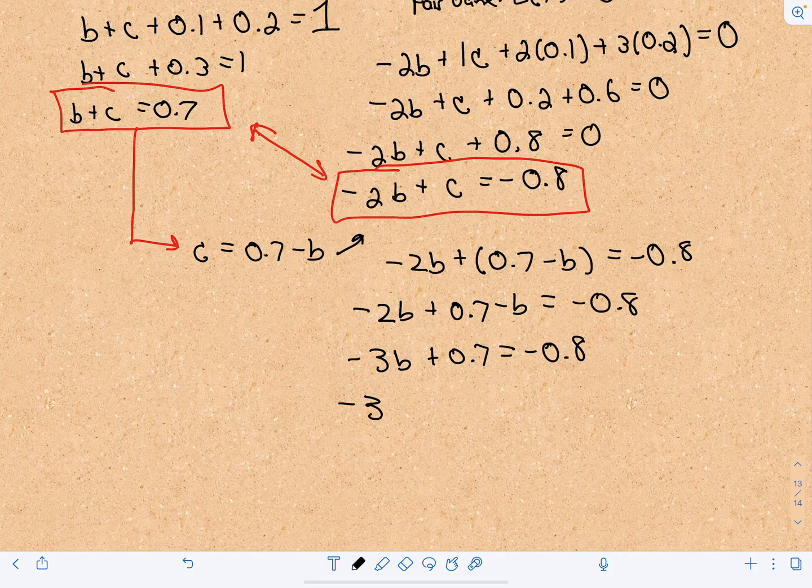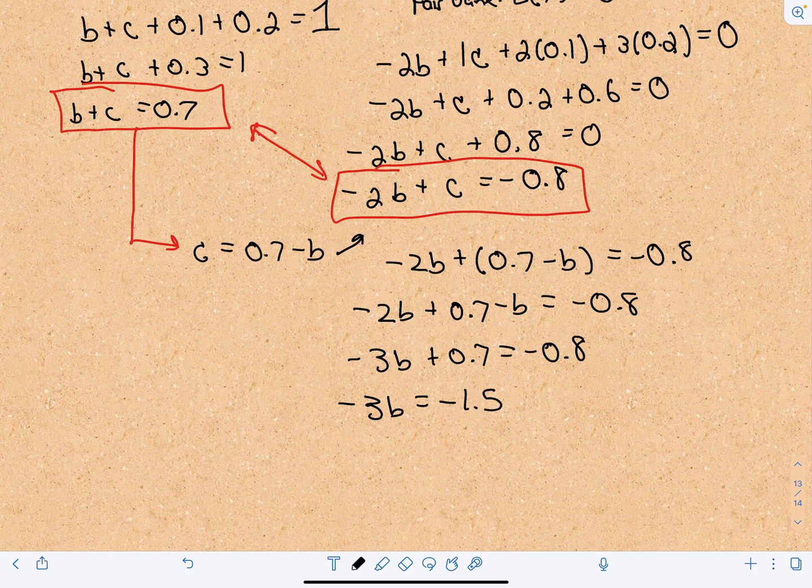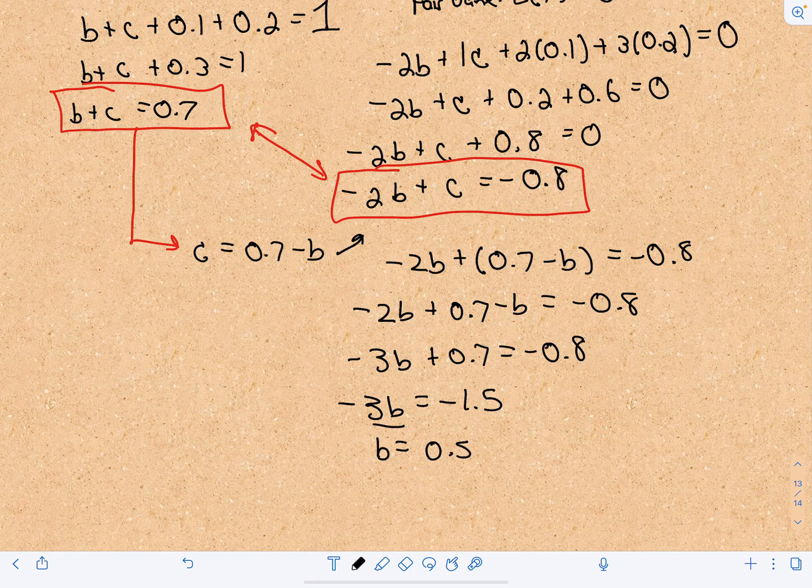That's going to give me negative 3B equals negative 1.5. And if I divide both sides by negative 3, that's going to give me B equals 0.5.